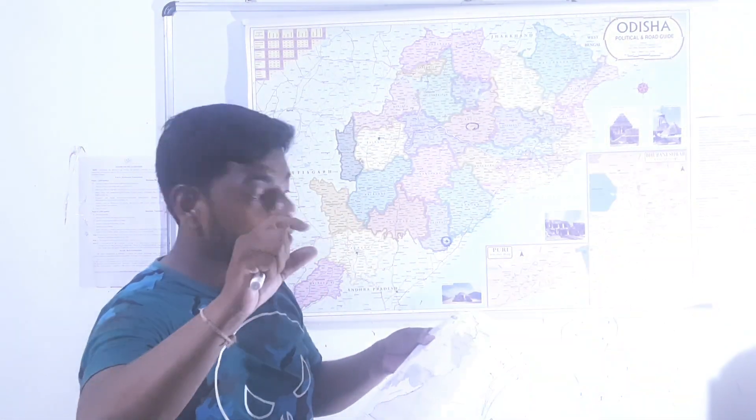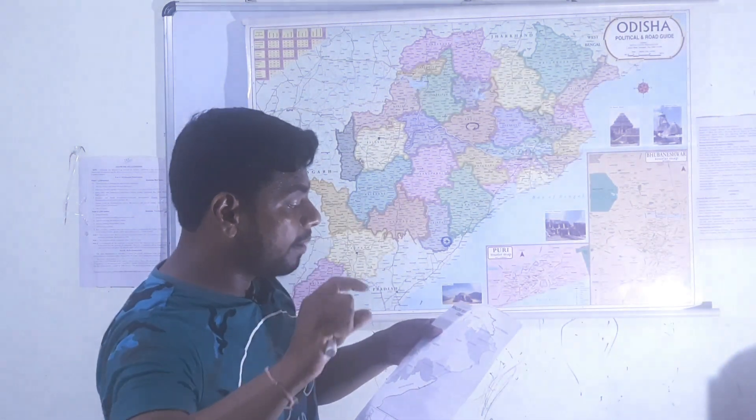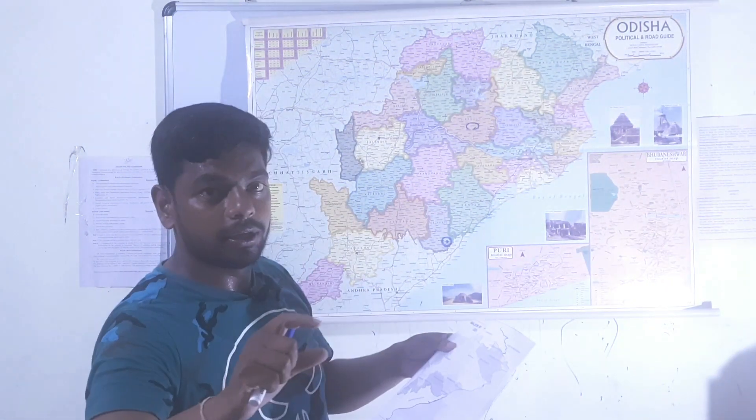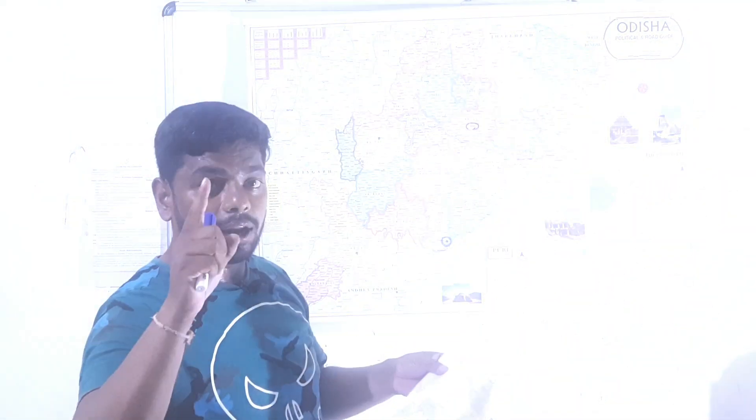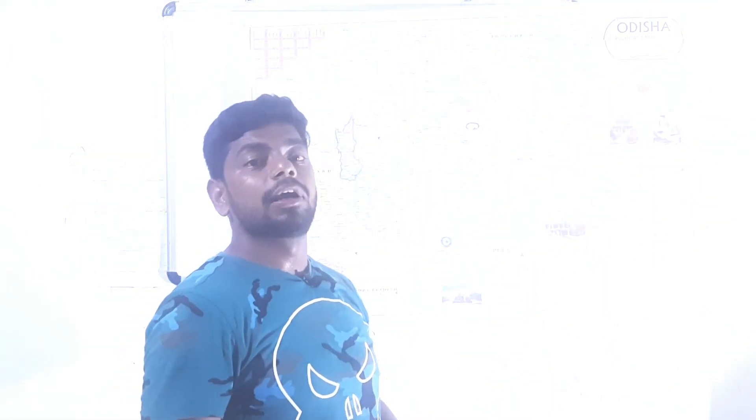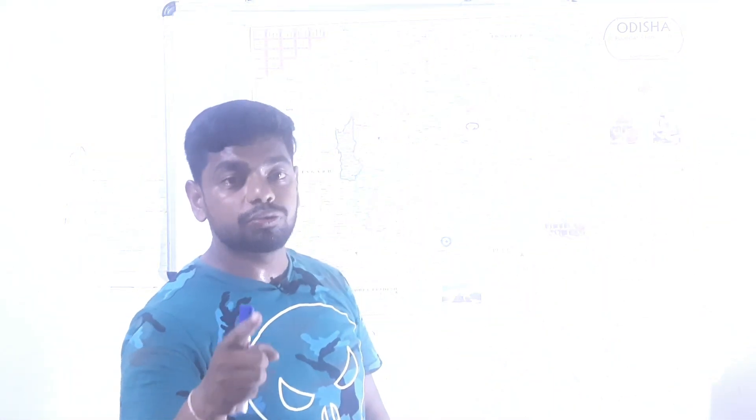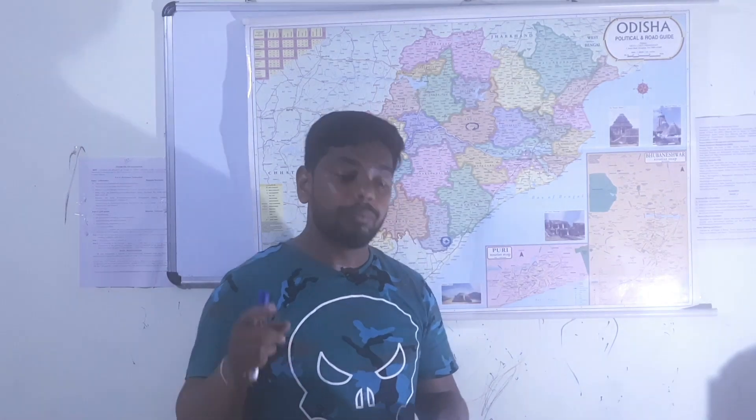Brahmani is a major river with Subarnarekha, Budha Balanga, Baitarani, Brahmani, Mahanadi, and Rusikulia forming the six rivers. The largest catchment basin in Odisha is Mahanadi, and the second largest river basin is Brahmani.